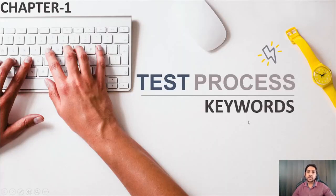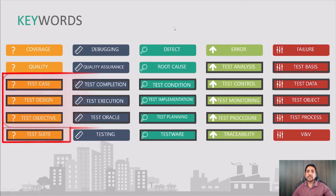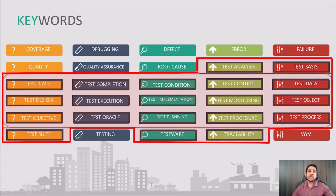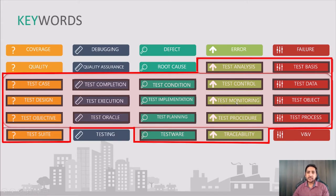Now we need to know the keywords which we are going to cover under this topic. The majority of keywords will be covered now, like test analysis, test basis, test cases, test completion, test condition, test control, test data, test design, test execution, test implementation, test monitoring, test object, objective of test, test oracle, test planning, test procedures, test process, test suits, testware, and traceability. You should know and understand the difference between all of these.